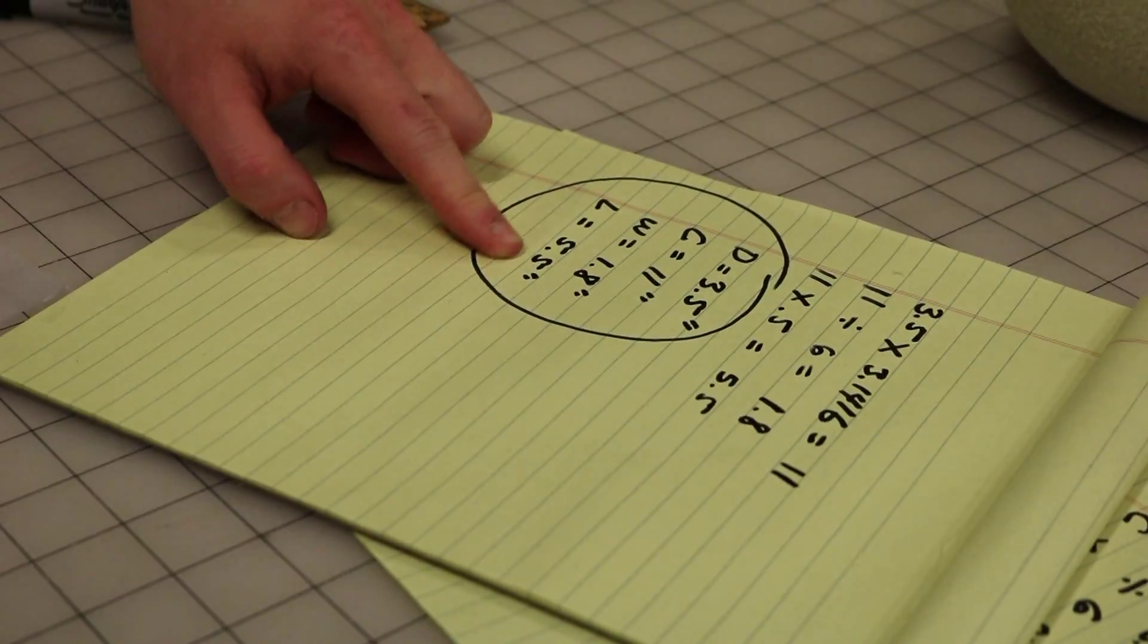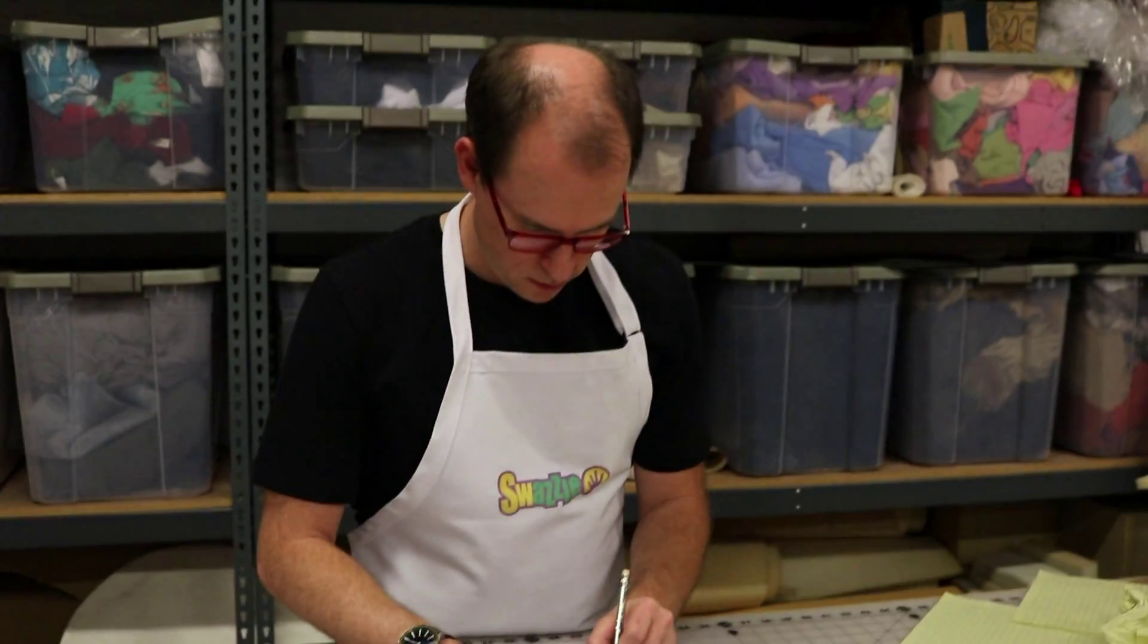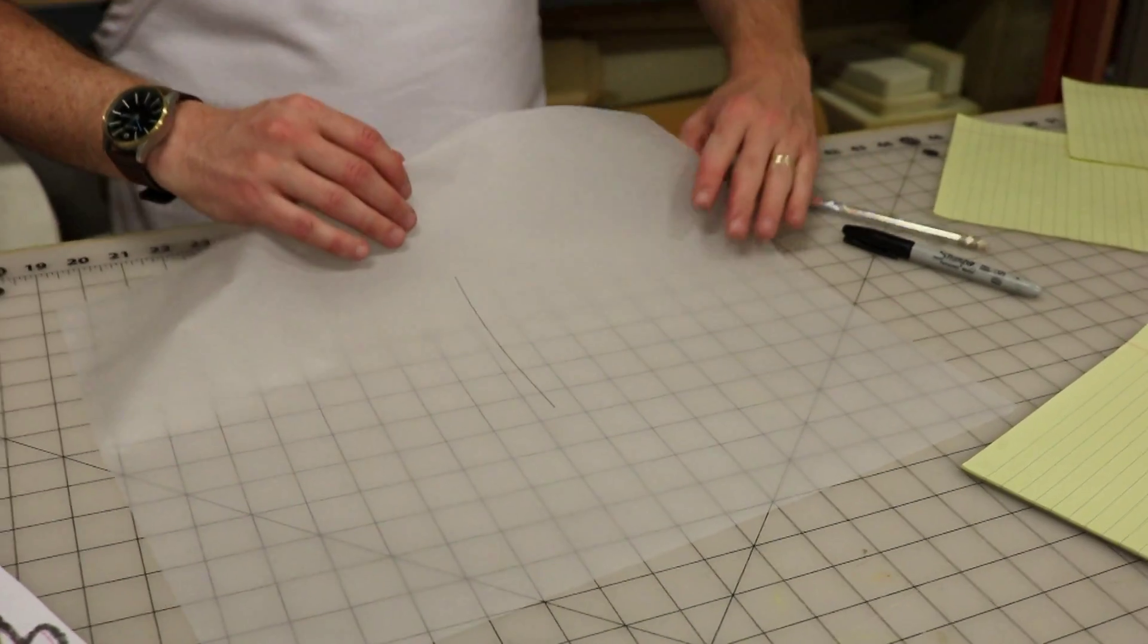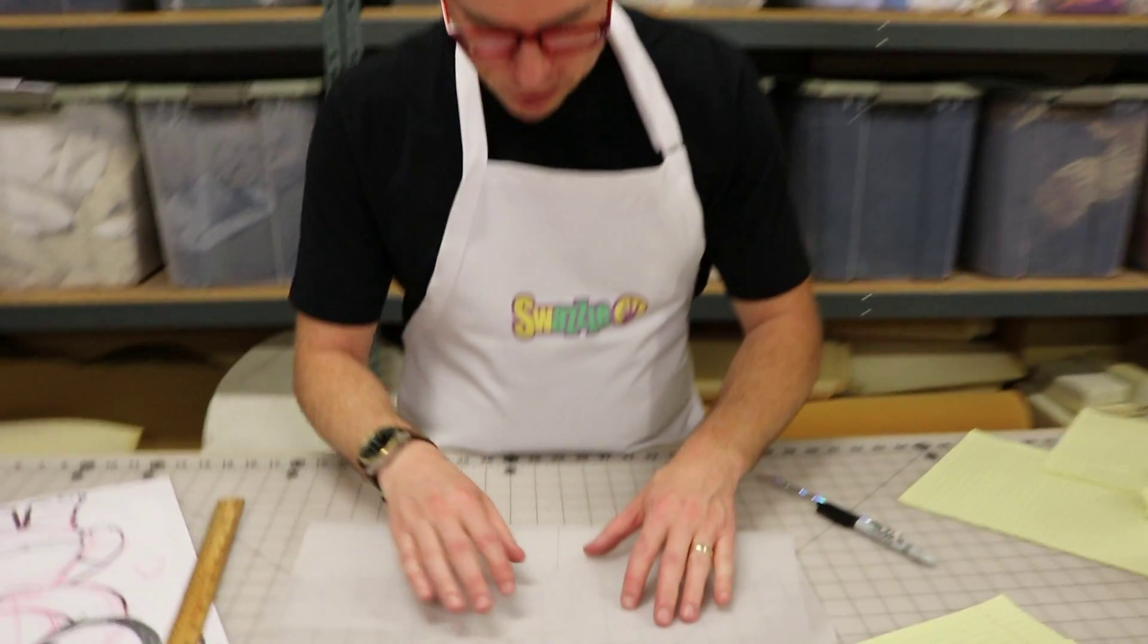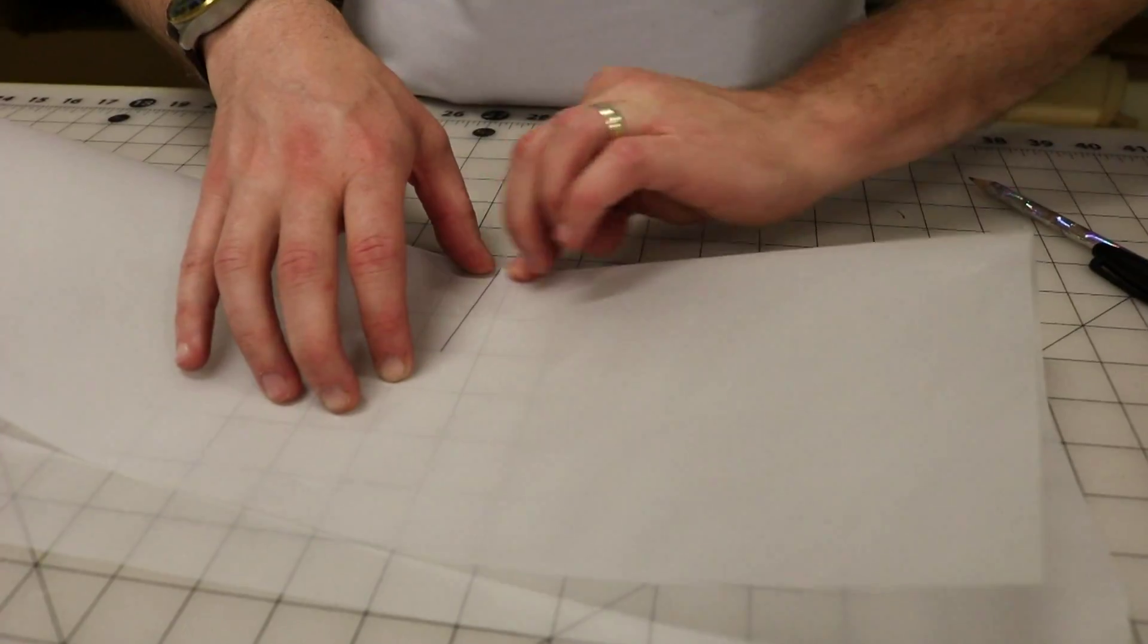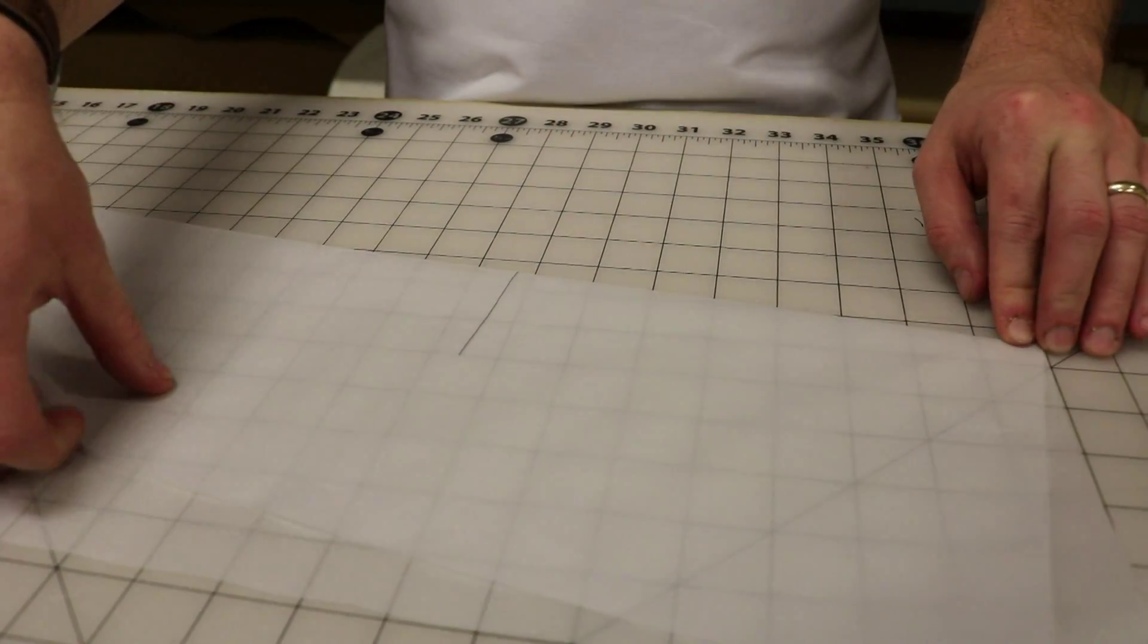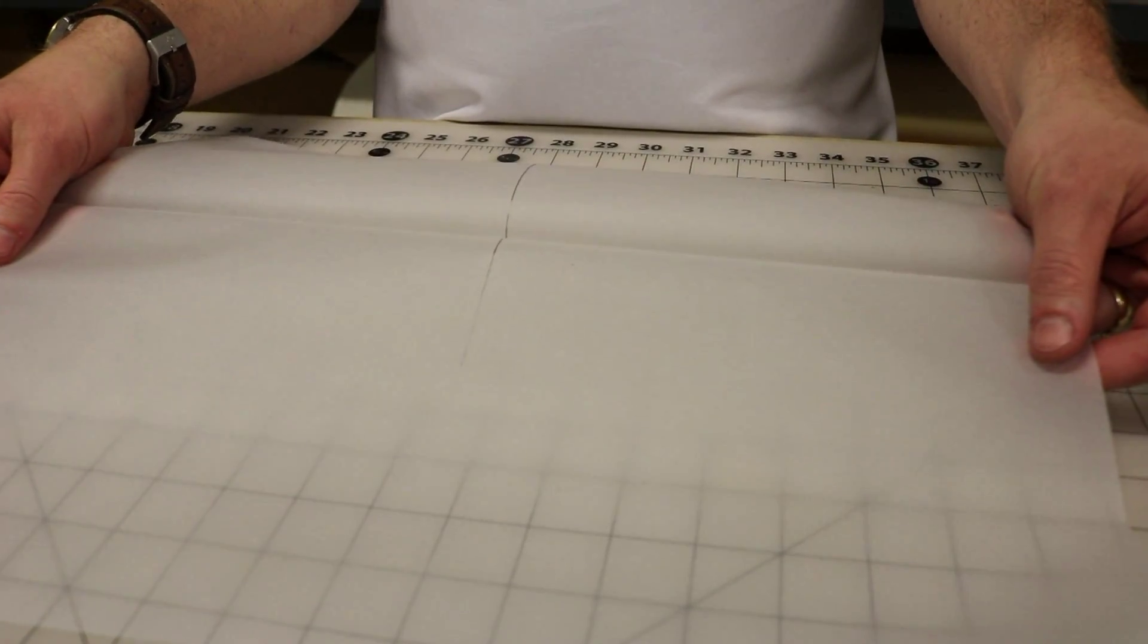We need a length of 5.5 inches. And I measure out a line that's 5.5 inches. Now we need to find the center point of that line. The easiest way to do it, this is why I use tracing paper. If you fold this in half, line it up with your little line there, and there is our center line.